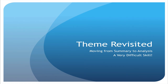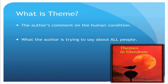So let's go ahead and see what we're talking about. First off, let's review for a minute. What exactly is theme in a text? Theme is the author's comment on the human condition. Basically, this is what the author is trying to say or to teach all people through this text.